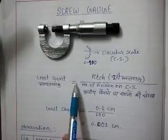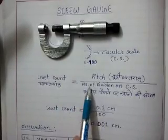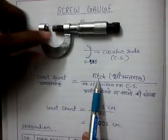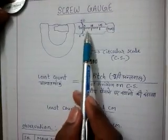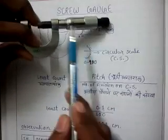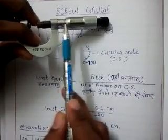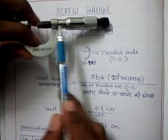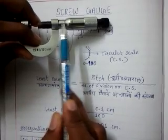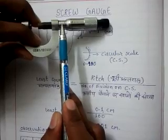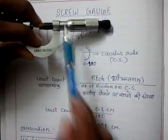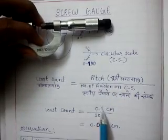We can find the least count by using this relation: pitch over number of divisions on the circular scale. Pitch is the minimum distance between two successive lines on the main scale, which is engraved over this part. You can see there are many successive lines drawn in this part. This is the main scale on which the distance is 0.1 cm.